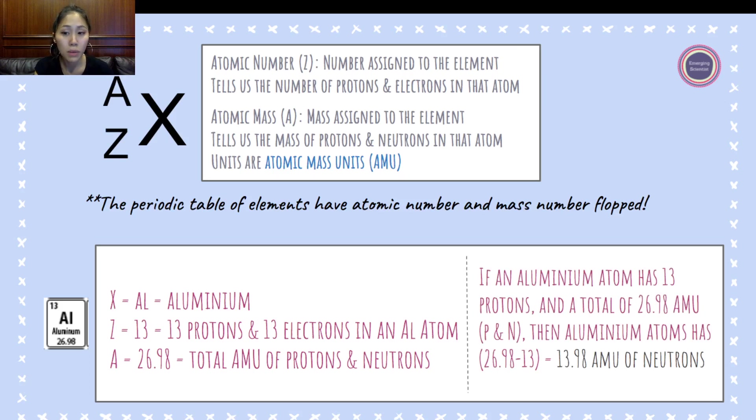If an aluminum atom has 13 protons, we know that has 13 protons, we know the mass number tells us that it has 26.98 protons and neutrons, then we can put together a mathematical equation to solve for the number of neutrons that are in aluminum.